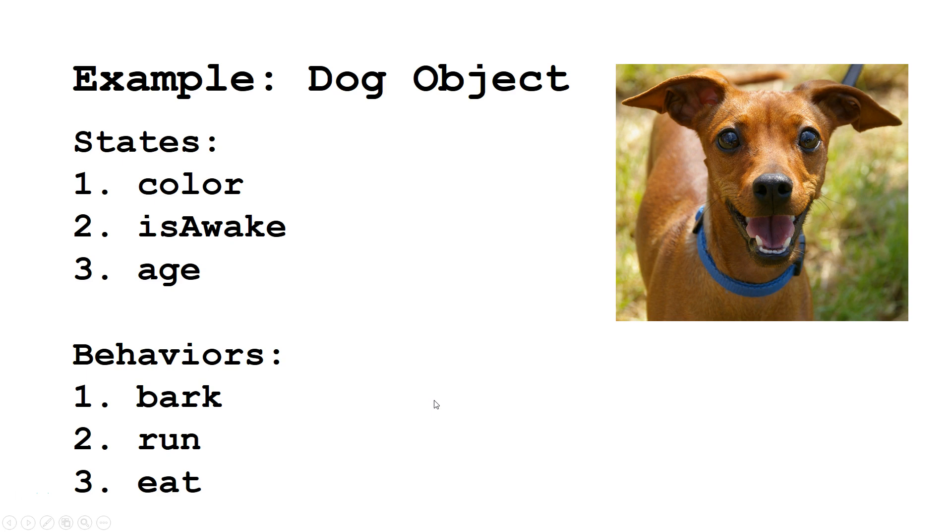So let's take an example of a real-world object that we might want to represent in programming. This dog has states: color, is it awake, and its age. And the dog also has behaviors, like bark, run, and eat. The states would be represented by fields. The behaviors would be represented by methods.